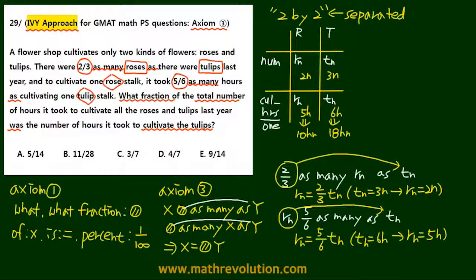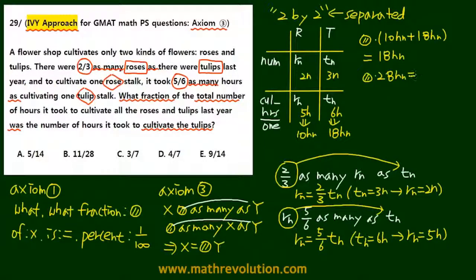Now our question was, using axiom number 1, what fraction, so something times total number. So total number was 10hn plus 18hn, was, so 'was' is 'is', equal tulip. So tulip was 18hn. So something times 28hn equals 18hn.